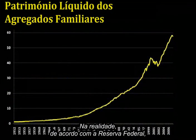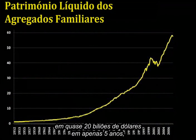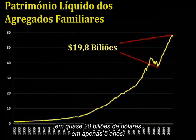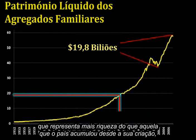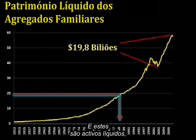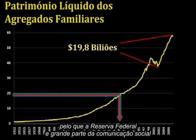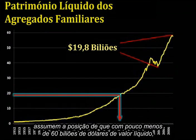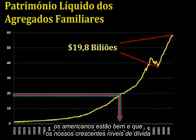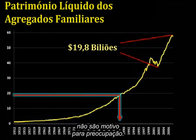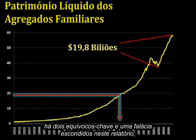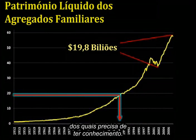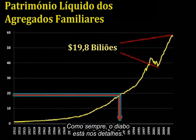According to the Federal Reserve, household net worth has exploded by nearly $20 trillion in only five years — an astonishing feat, representing more wealth than our country managed to amass from its inception until the late 1980s. With just under $60 trillion in net worth, the Fed and many in the media take the position that Americans are doing just fine and our rapidly climbing levels of debt are no cause for concern. But before we get too excited, there are two key oversights and a fallacy hidden in this report. As always, the devil's in the details.